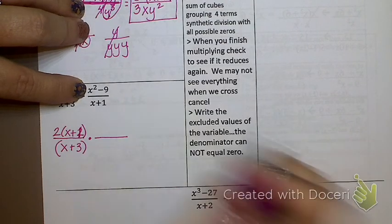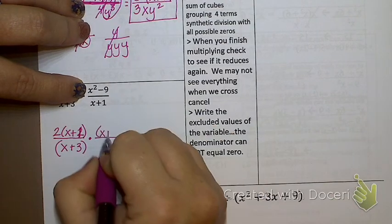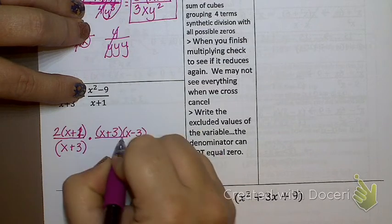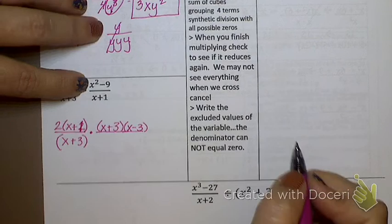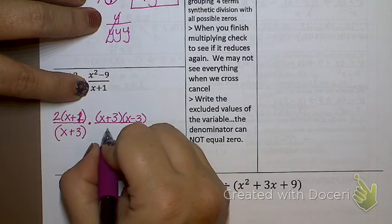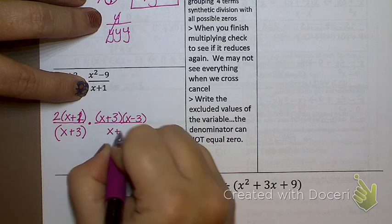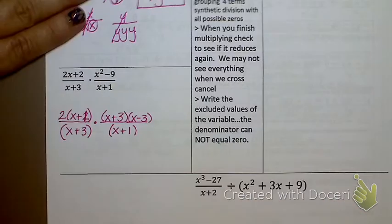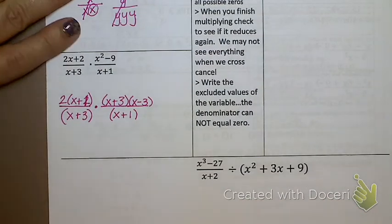x plus 3, x minus 3? Or x minus 3, x plus 3? Doesn't matter the order. And then x plus 1, can I factor that? Nope. So I'm going to do what to it? Put it in parentheses. Because it's got to be stuck together. All right. What do I do now? Make my one giant fraction. There we go.